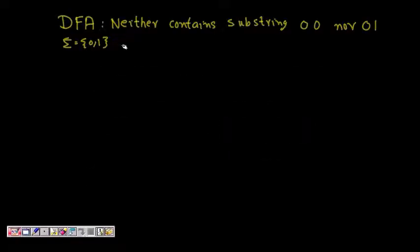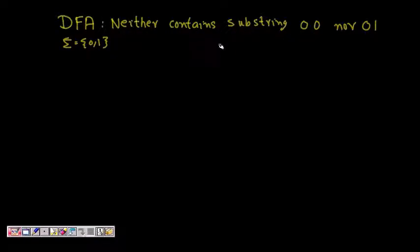Hello friends. In this lecture we are going to learn how to design a DFA which contains neither substring 00 nor 01. So it should not have either 00 or 01, and your sigma is {0, 1}.